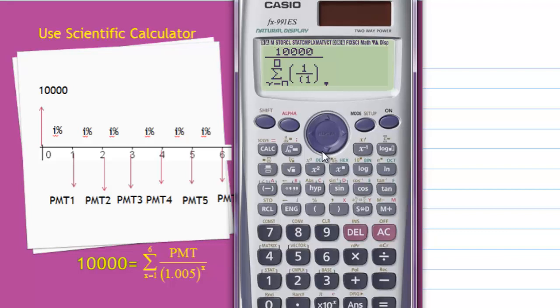Calculate 1/(1.005)^x where x from 1 to 6, and then press equal. So the monthly installment is $1,695.95.